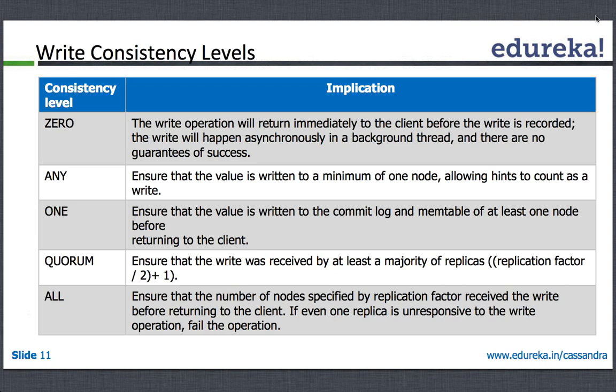Consistency level 'any' ensures the value is written to a minimum of one node, allowing hinted handoff to count as a write. The difference between 'any' and level one is subtle: in 'any', writing to the commit log alone is enough, while consistency level one ensures it is written to the commit log and mem table of at least one node before returning. Quorum ensures it's written to the majority — for three replicas, at least two nodes — then returns the call to the client.